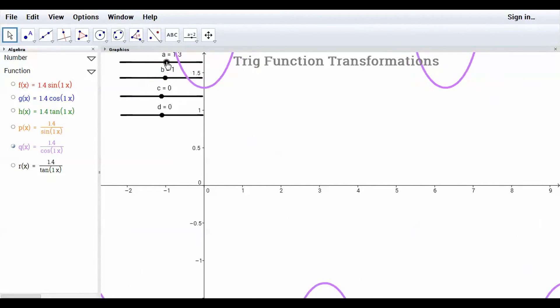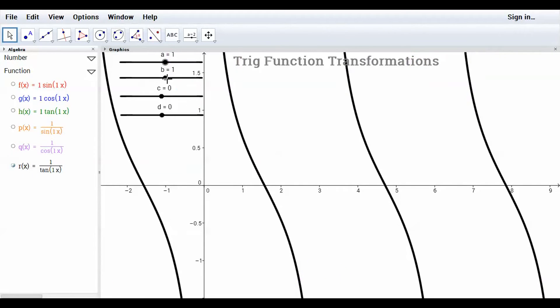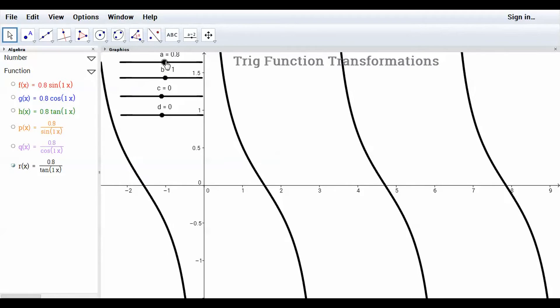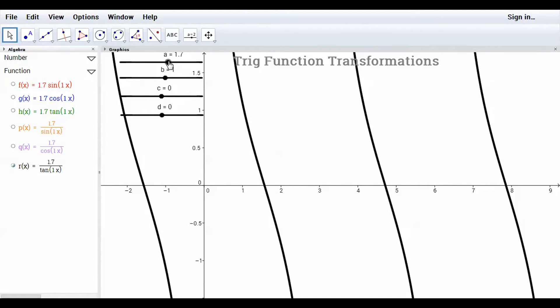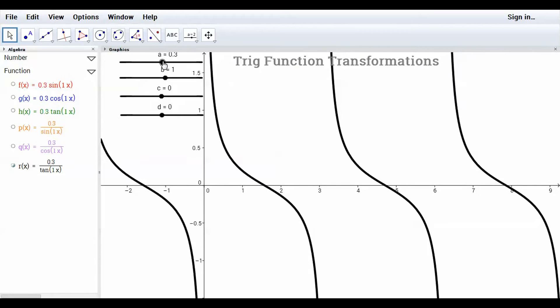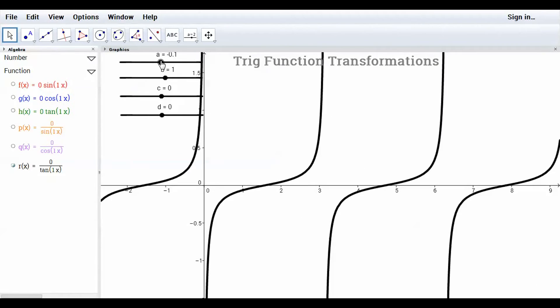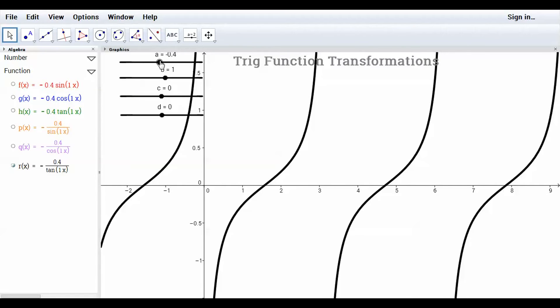And finally, for cotangent, if I pull cotangent up on the screen, same thing. If I make the A value bigger than 1, it kind of gets skinnier and stretched vertically, and a fraction between 0 and 1, it kind of gets squished down. So negating that makes it kind of look like a tangent.